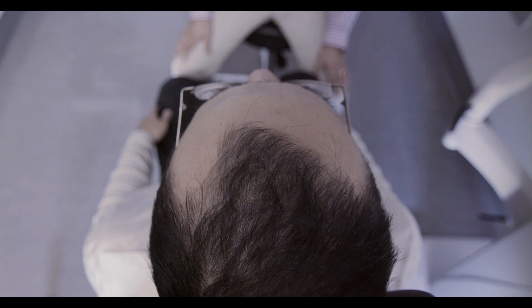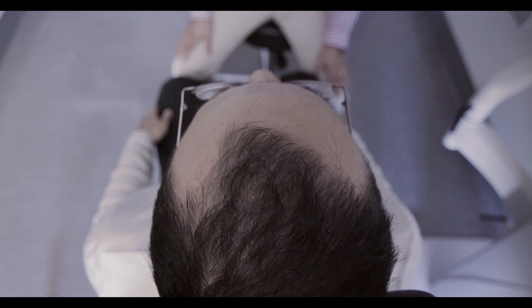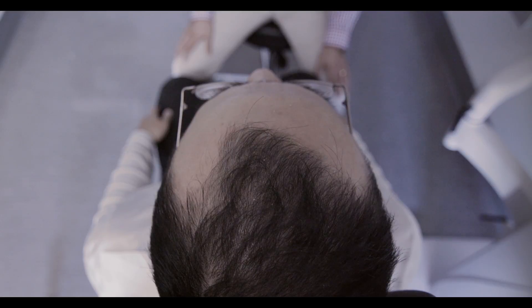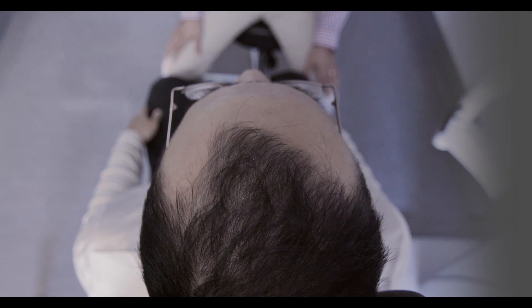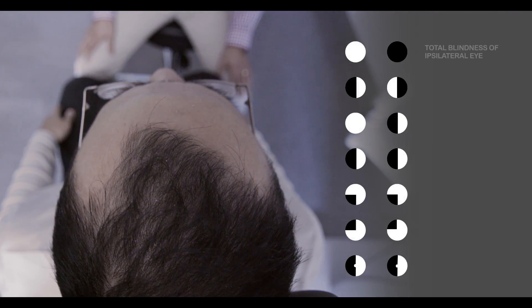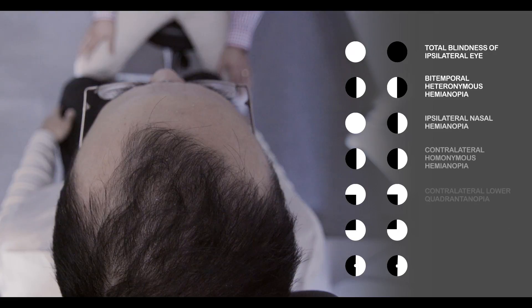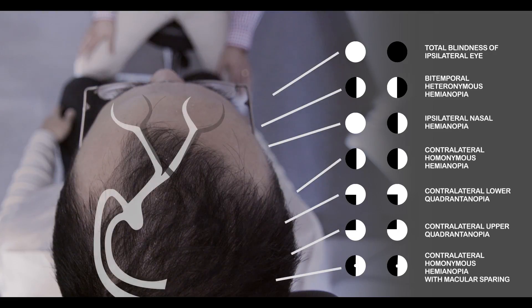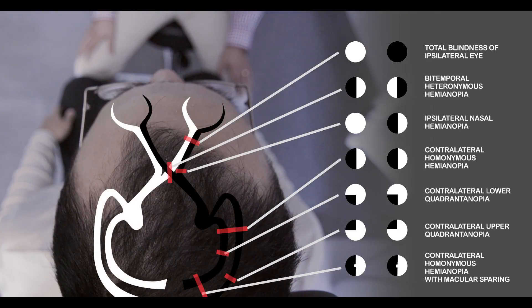Certain types of field defects are associated with specific areas of damage along the visual pathway. Here we see the potential visual field defects and their respective damage area.